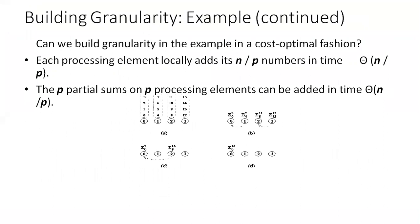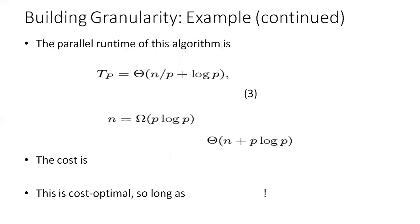Can we build granularity in this example in a cost-optimal fashion? Each processing element locally adds n/p numbers in time O(n/p). The p partial sums from p processing elements can then be added in time O(log p), as shown in the figure. The resulting parallel runtime is Tp = O(n/p + log p), which is cost optimal so long as n = Ω(p log p). This demonstrates the effect of granularity on performance — we can make a non-cost-optimal algorithm cost optimal by using granularity, scaling down the number of processors to increase performance.